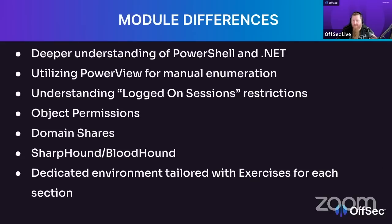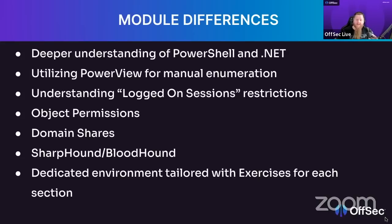There have been some changes from Microsoft around logged-on session enumeration, which is a bit painful — introduced around a specific Windows 10 version. A new introduction is object permissions, which is very important to enumerate in Active Directory. Domain shares is also newly covered. SharpHound and BloodHound are two go-to tools we really need to understand for enumerating especially bigger organizations.